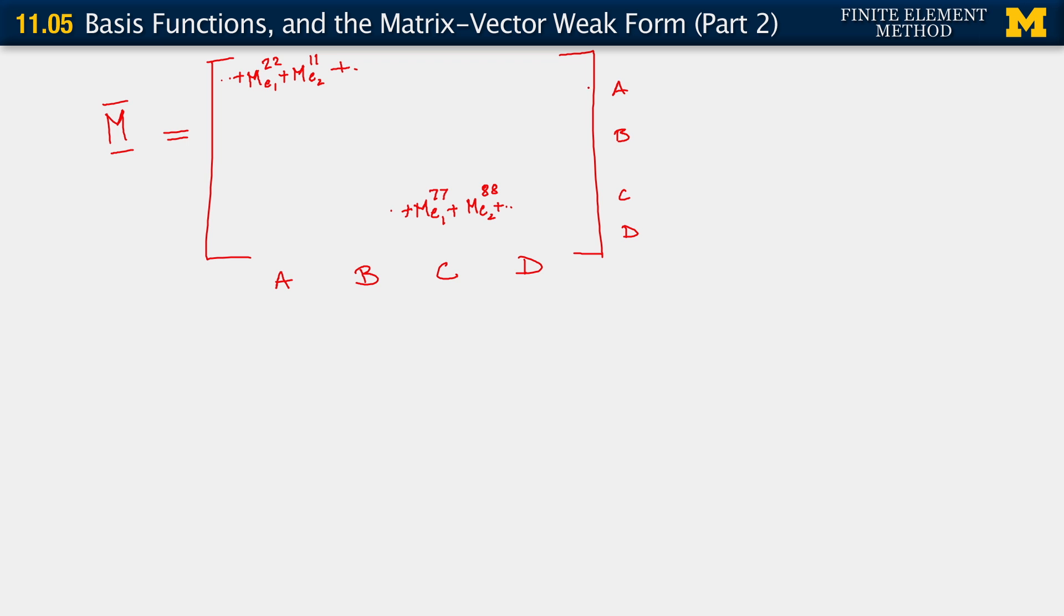So the ab term means row a, column b. Row a, column b would be here: me1 2,6 plus me2 1,5. And then, let's do the row b, column a term, which would be the one here. Row b, column a term would be from me1: 6,2 plus me2: 5,1.